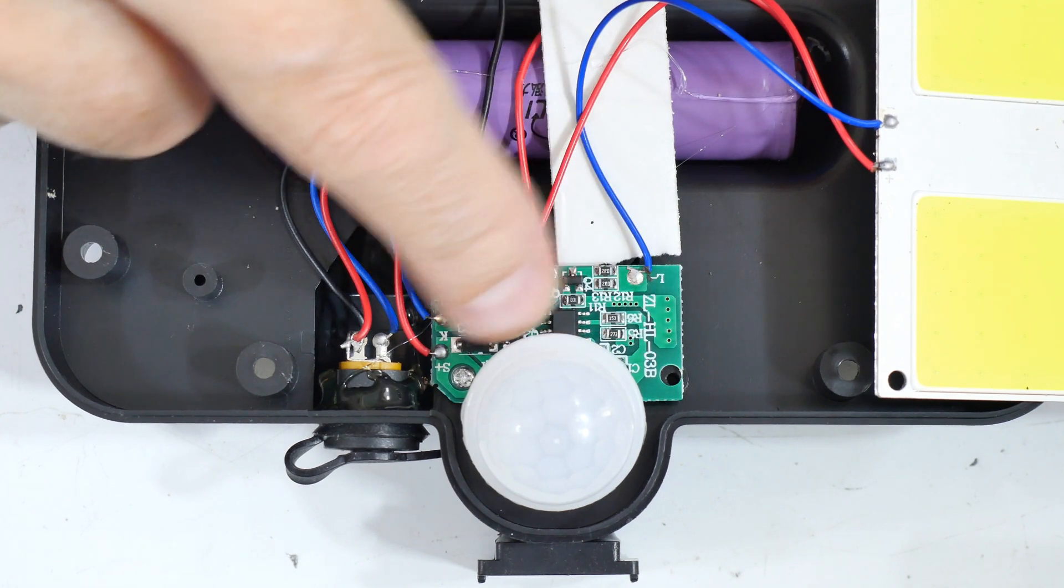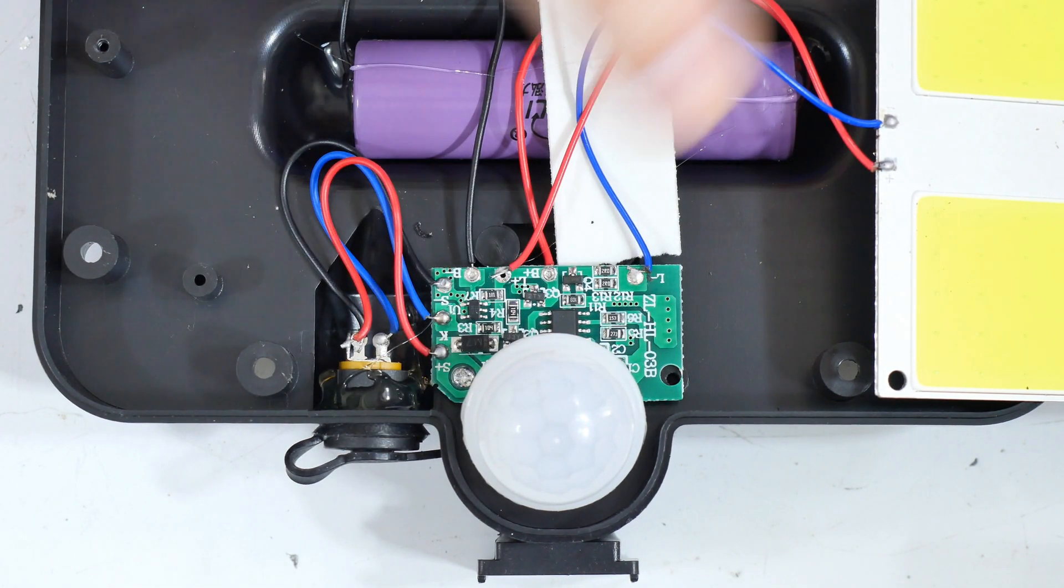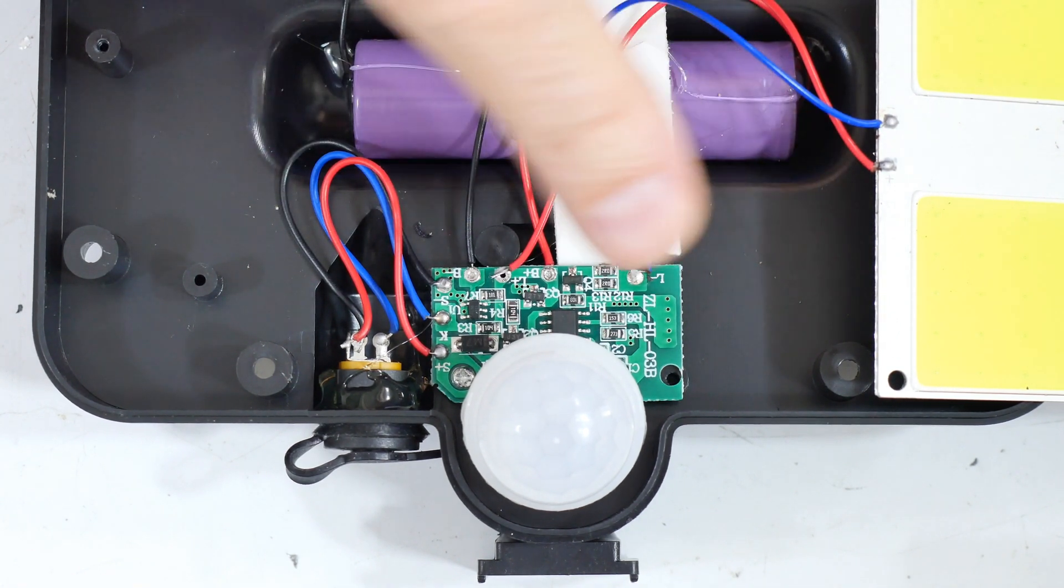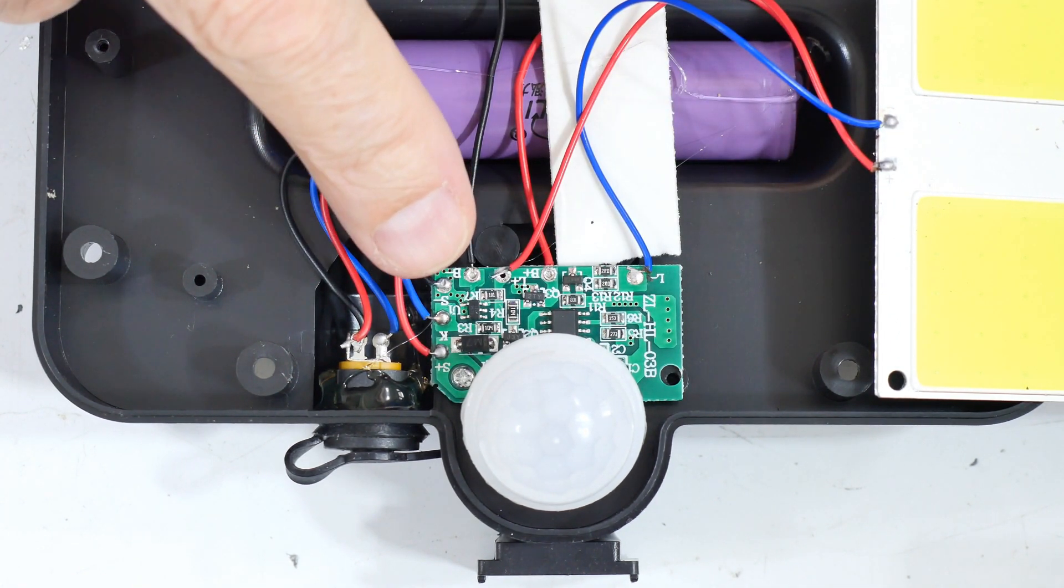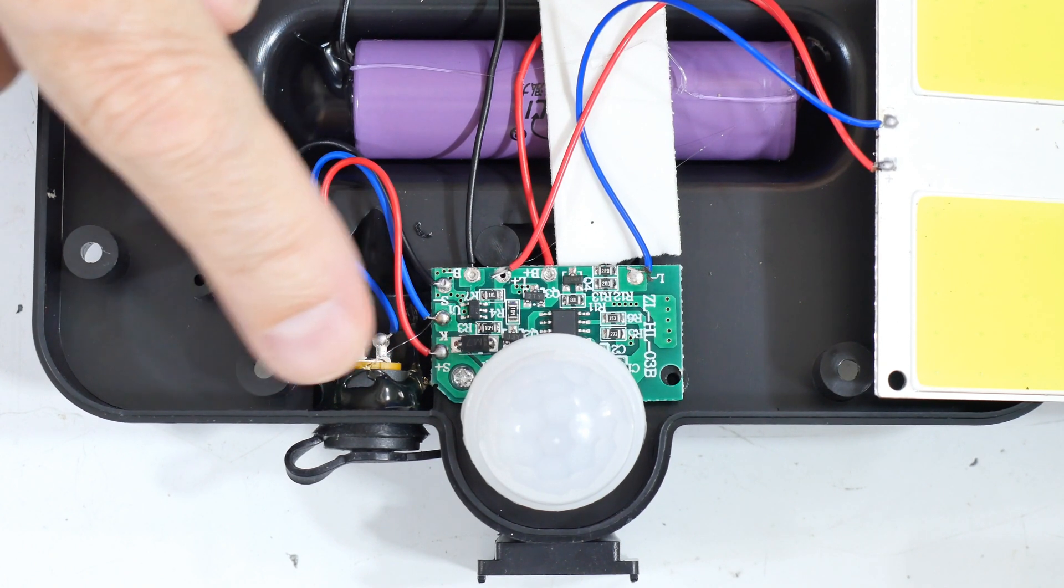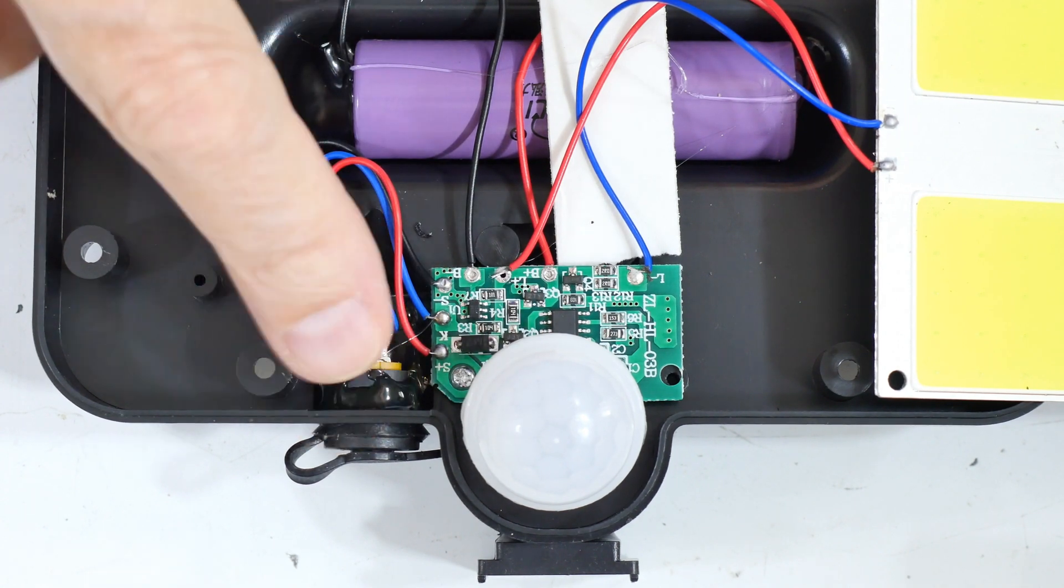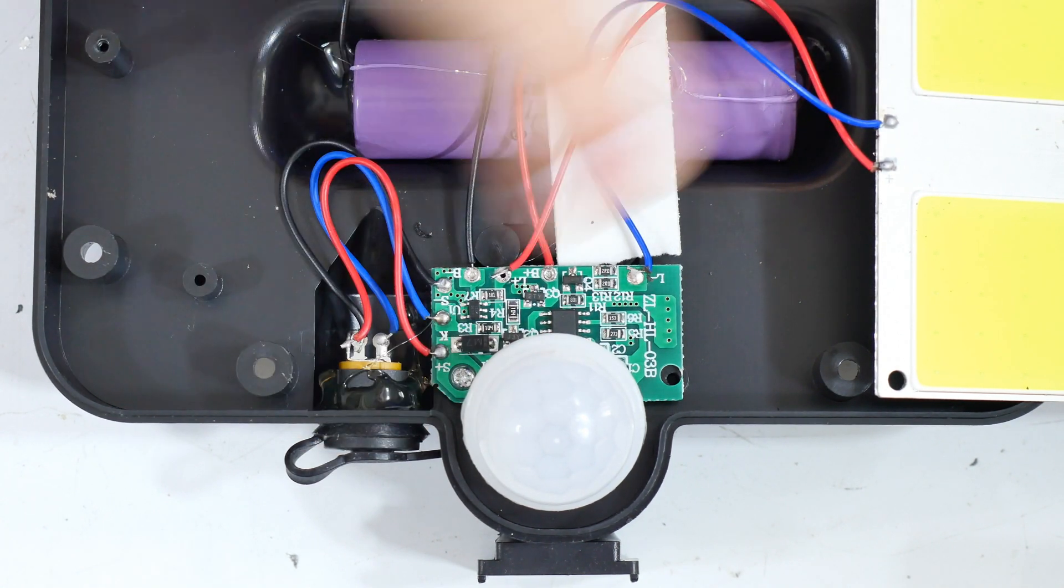And then of course this is the logic that the PIR uses to decide whether to turn the LEDs on and off. It also listens to the solar panel because when it's light outside, this will not activate. So when it's charging, it will not activate the LEDs.